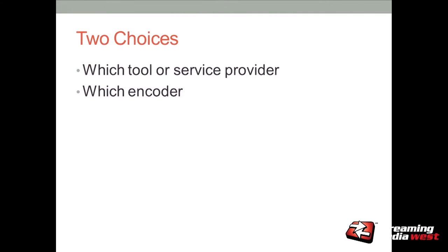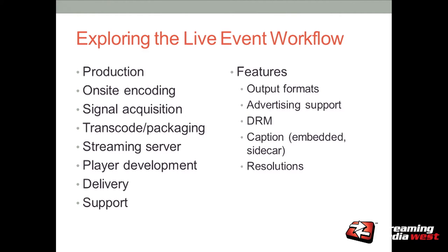So: option one, use the big iron encoder to create all the files you need at your event location. Option two, create files in your adaptive group at that location and transmux in the cloud. Option three, send one file up to the cloud and let the cloud do the transcode into separate streams and transmux into different formats. Everyone should be clear on those three high-level options for getting to the adaptive group for desktop and the adaptive group for mobile.